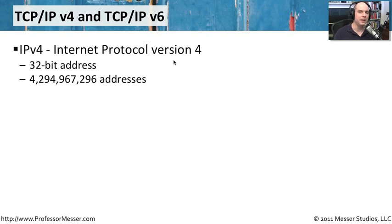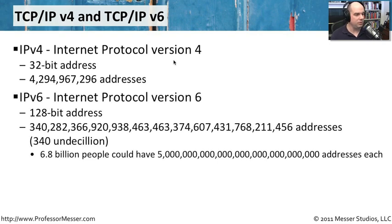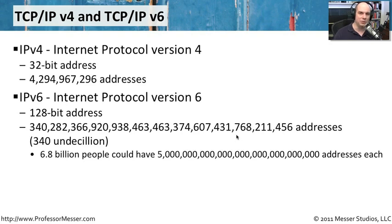So we needed something bigger and more flexible — something that would give us capabilities well into the unforeseeable future. We came up with a new version: IPv6. These are 128-bit addresses, and they are much larger. The total number of addresses available means everybody in the world can have many, many addresses and still have plenty left over. You can cover the entire world, parts of the ocean, with IP addresses and still have more to spare. There's a lot of flexibility there, and we'll talk about some of the additional advantages IPv6 brings.